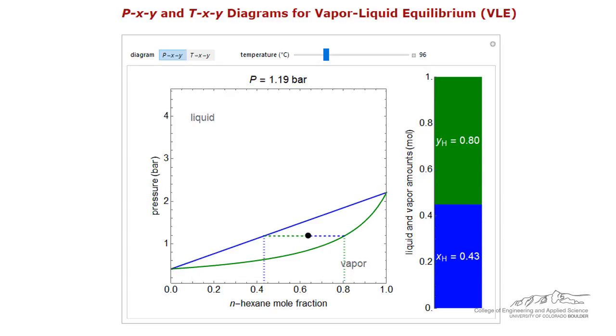Tie lines are horizontal lines, and the compositions in the liquid and vapor phases can be obtained by dropping vertical lines from where the tie lines intersect the blue and green curves.